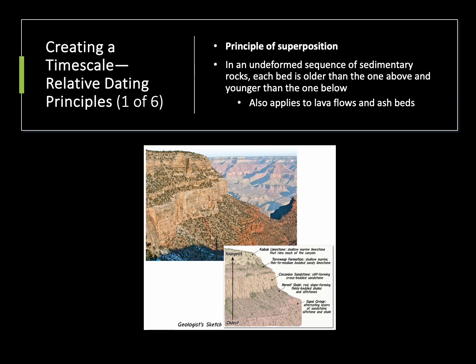The first principle is probably the simplest, and it's called the principle of superposition. If we're looking at a sequence of rocks, we can see that the layers at the bottom are going to be older, and the layers at the top are going to be younger. Think of this like building a building — if we're going to construct a three-story building, we always have to start at the bottom, build the first floor, then the second floor, then the third floor. Our first floor will be there the longest, it'll be the oldest, and as we progress upwards it'll get younger, just like we see rocks do with this principle of superposition.